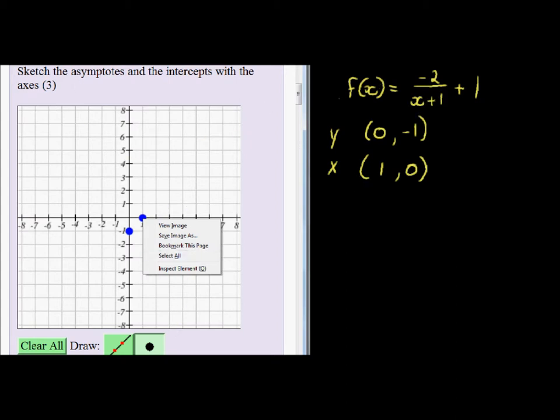The asymptote is where x and y is not allowed, what x and y is not allowed to be. We can see in the denominator, x plus 1 may not be equal to 0.